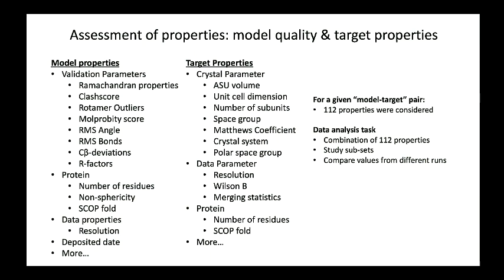At this stage we had, for a given model-target pair, 112 properties. Sometimes we had to consider ratios of these properties and understand how they are correlated in a subset of the data. For example, how the sum of them are correlated for a particular kind or class of protein. All these combinations and comparative analysis was a non-trivial task.